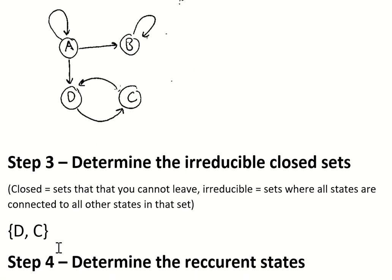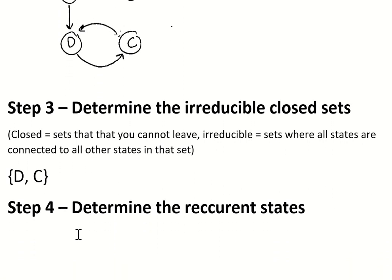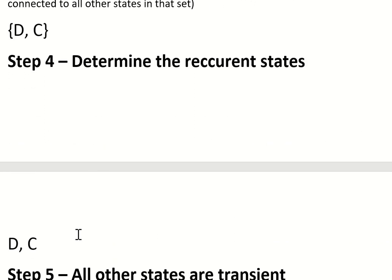Step four is to determine all the recurrent states. All the recurrent states are all of the states that are in any set that is both irreducible and closed. In this example, it would be D and C.